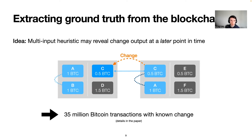Our work addresses both of these issues. The first important contribution is a novel technique to extract ground truth from the blockchain that allows us to validate change address heuristics. The idea is that the multi-input heuristic may reveal change outputs at a later point in time. For example, if a transaction uses two inputs with addresses A and B and creates a change output C, and that change output is later spent together with address A or B, then the multi-input heuristic clusters those addresses together, revealing that C was the change in the previous transaction.